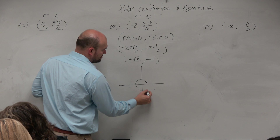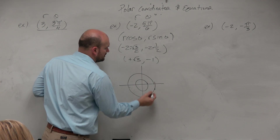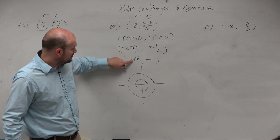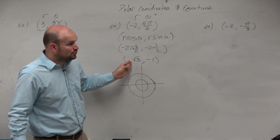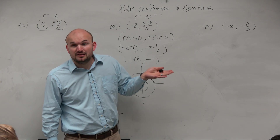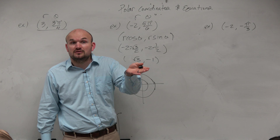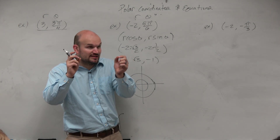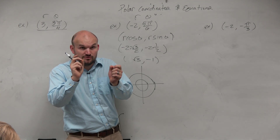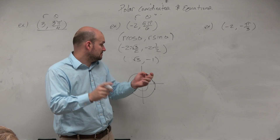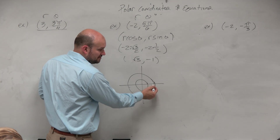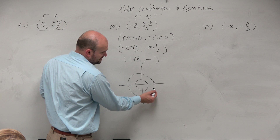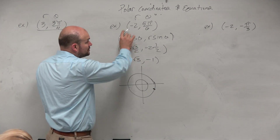If you were to sketch this, this is a rectangular coordinate. Square root of 3 — you can just estimate this. The square root of 4 is 2, square root of 1 is 1, so the square root of 3 is between 1 and 2. So it's somewhere in between here, between 1 and 2, and then obviously we're down at negative 1. So there's your coordinate point.